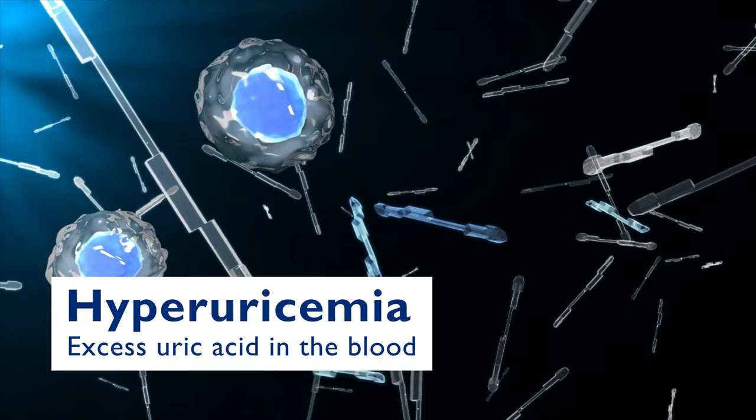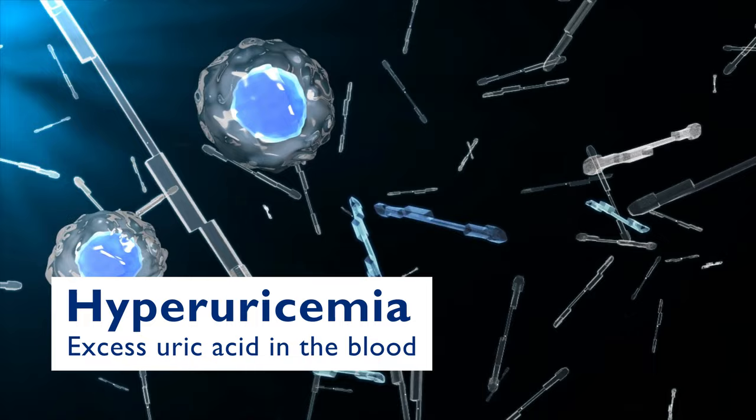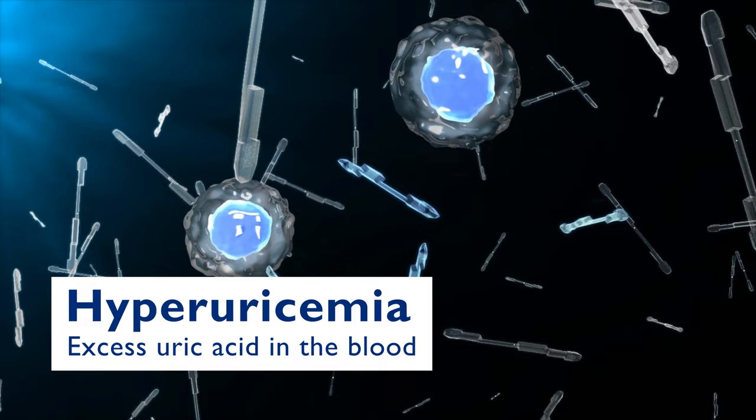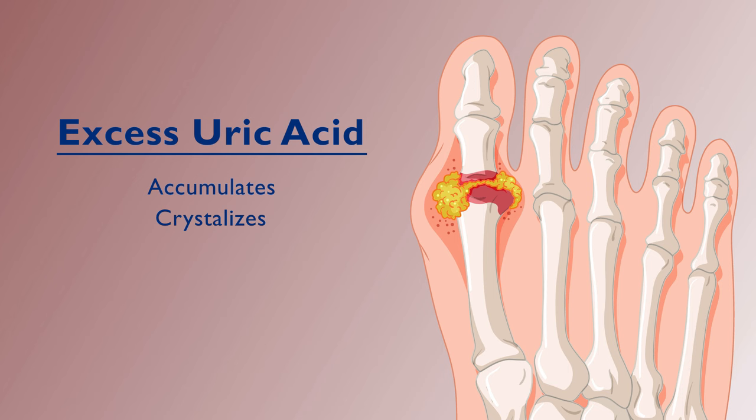If there is hyperuricemia — or too much uric acid in the blood — it means that uric acid is overly produced or not excreted in the body. This excess uric acid tends to accumulate and crystallize,